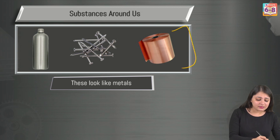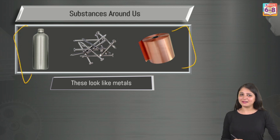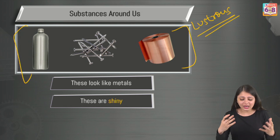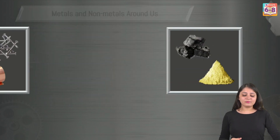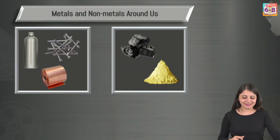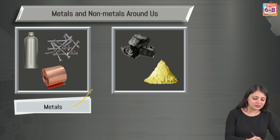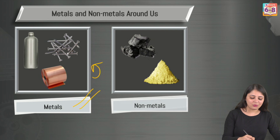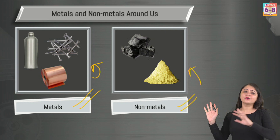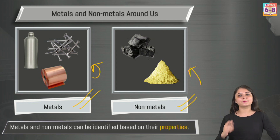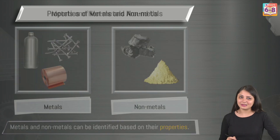These three substances here look like metal because they are shining — metals are lustrous in nature, meaning they have a shine. Nonmetals, on the other hand, are non-lustrous. So just based on shine you could figure out which are metals and which are nonmetals.